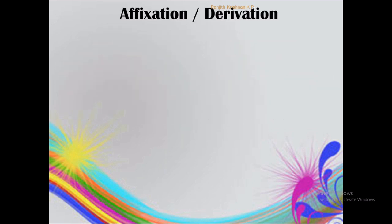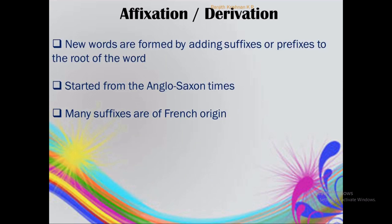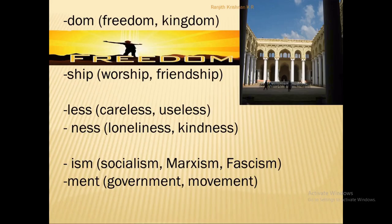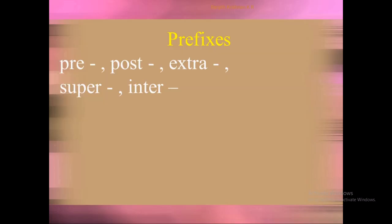The second process of word formation is affixation, also known as derivation, where new words are formed by adding suffixes or prefixes to the root of a word. This process started from Anglo-Saxon times, and many suffixes come from French. For example, the suffix '-dom' gives us freedom and kingdom; '-ship' gives worship and friendship; '-less' gives careless and useless; '-ness' gives loneliness and kindness; '-ism' gives socialism, Marxism, and fascism; '-ment' gives government and movement. Prefixes like pre-, post-, super-, inter- also form new words — for example, international and extraordinary.